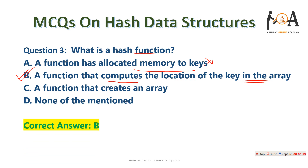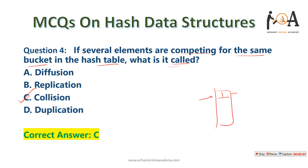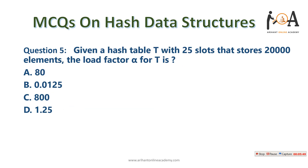Next question: if several elements are competing for the same bucket in the hash table, what is it called? If many elements claim the same bucket, we can resolve it via chaining or by adding links. This condition is called a collision — when several elements compete for the same position in the hash table.